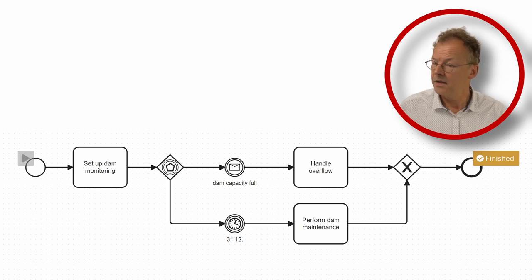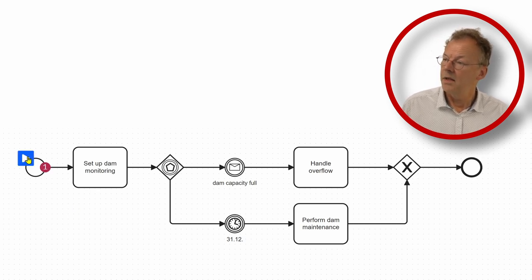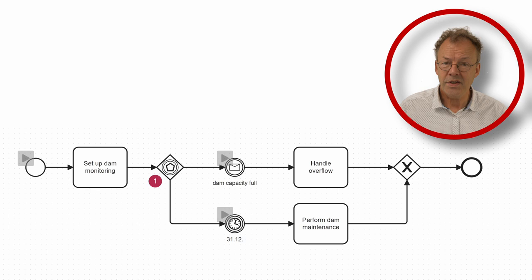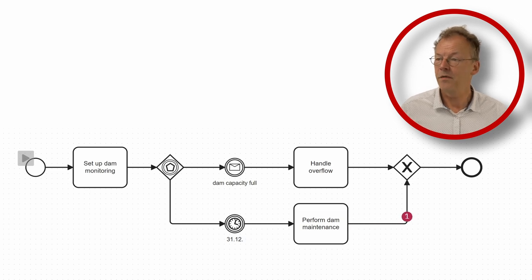In the second iteration, again we set up dam monitoring and this time we assume that the yearly maintenance is due and now we perform the dam maintenance and currently we are not waiting for the dam capacity full signal.